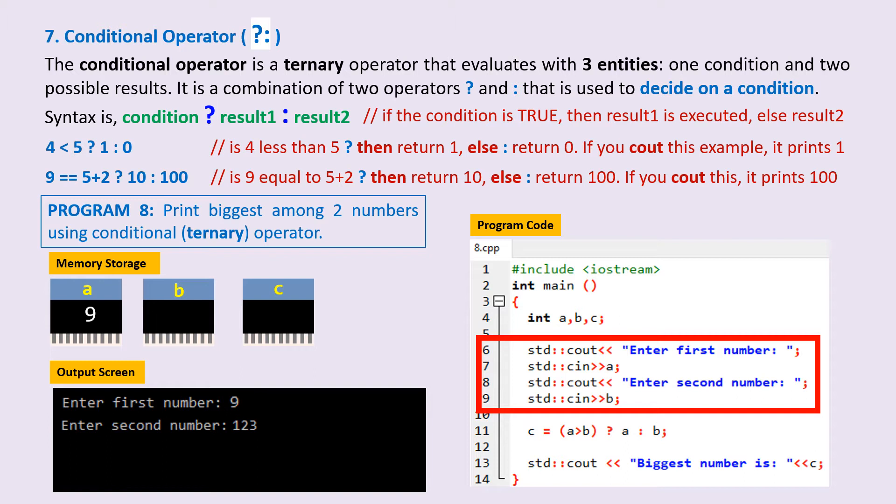I enter 9. The cin stores 9 into the memory location a. We are then prompted: enter second number.